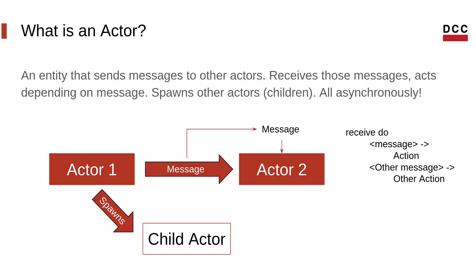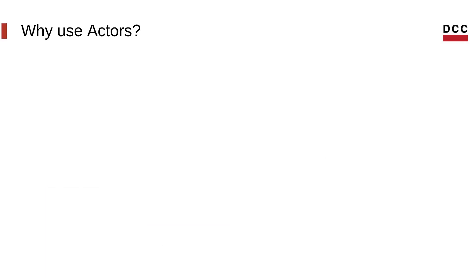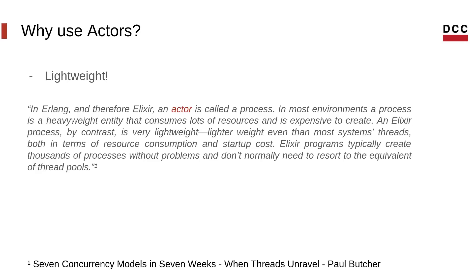We know what the model does, but what are the advantages of using it — why should we use actors? Let's start with lightweight. According to 'Seven Concurrency Models in Seven Weeks' by Paul Butcher, in Erlang and therefore Elixir an actor is called a process. An Elixir process is very lightweight — lighter than most system threads both in resource consumption and startup cost. Elixir programs typically create thousands of processes without problem and don't normally need thread pools. This lightweightedness means we can create actors freely without worries.